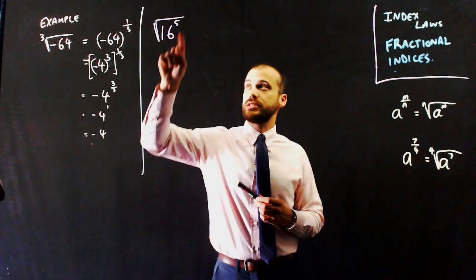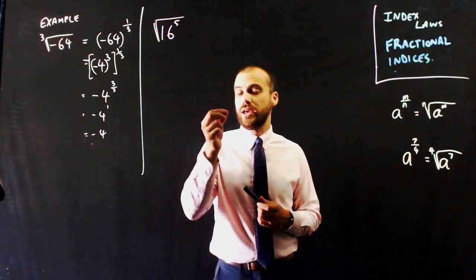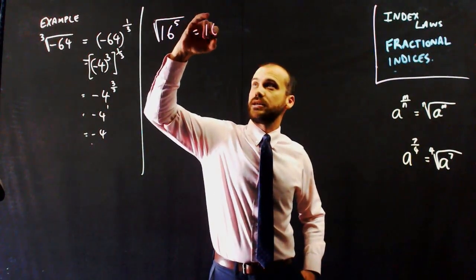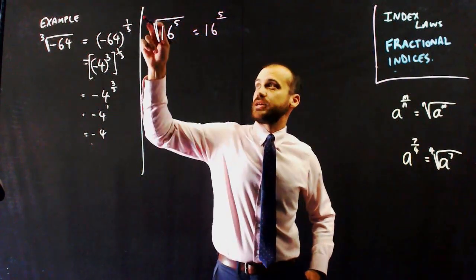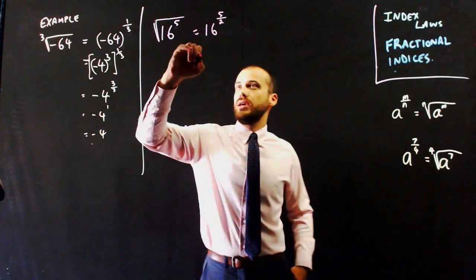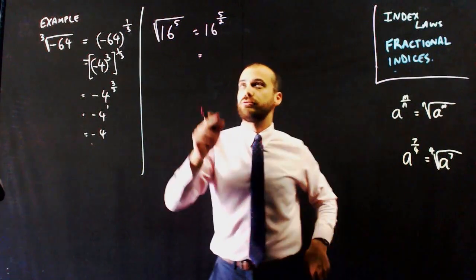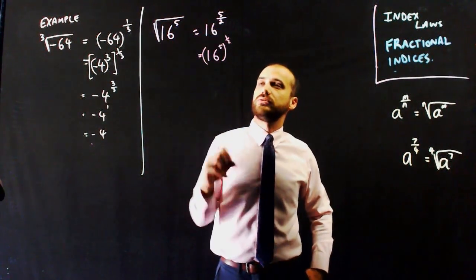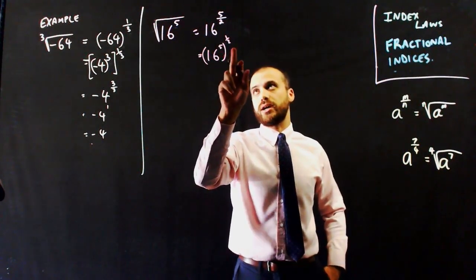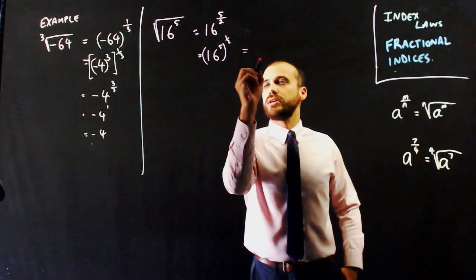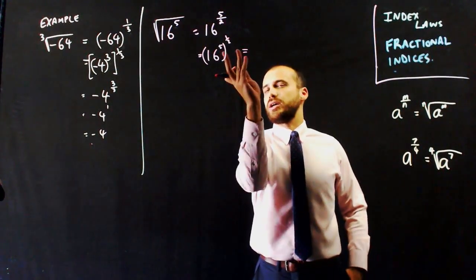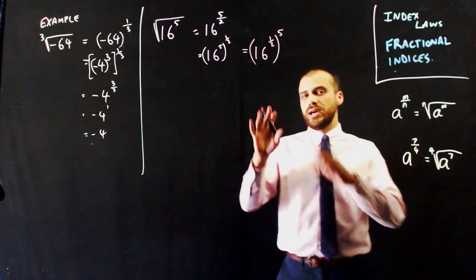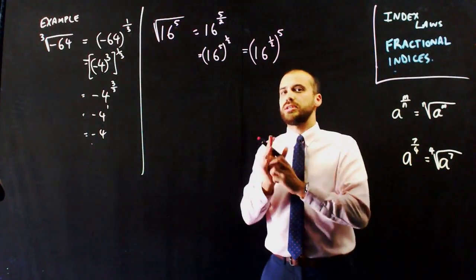Here's another example: the square root of 16 to the power of 5. Doing 16 to the power of 5 in your head and then trying to square root it is really difficult. But if we write it as a fractional index, we can see that this is going to be 16 — the power 5 is the numerator, and it's a square root so it's to the power of 5 over 2. There are a couple of different ways to break this up: I could write it as 16 to the power of 5, to the power of 1 half. Or I could swap and write it as 16 to the 1 half, to the power of 5. There's no right or wrong — it's just which one you think will get you closer to the answer.